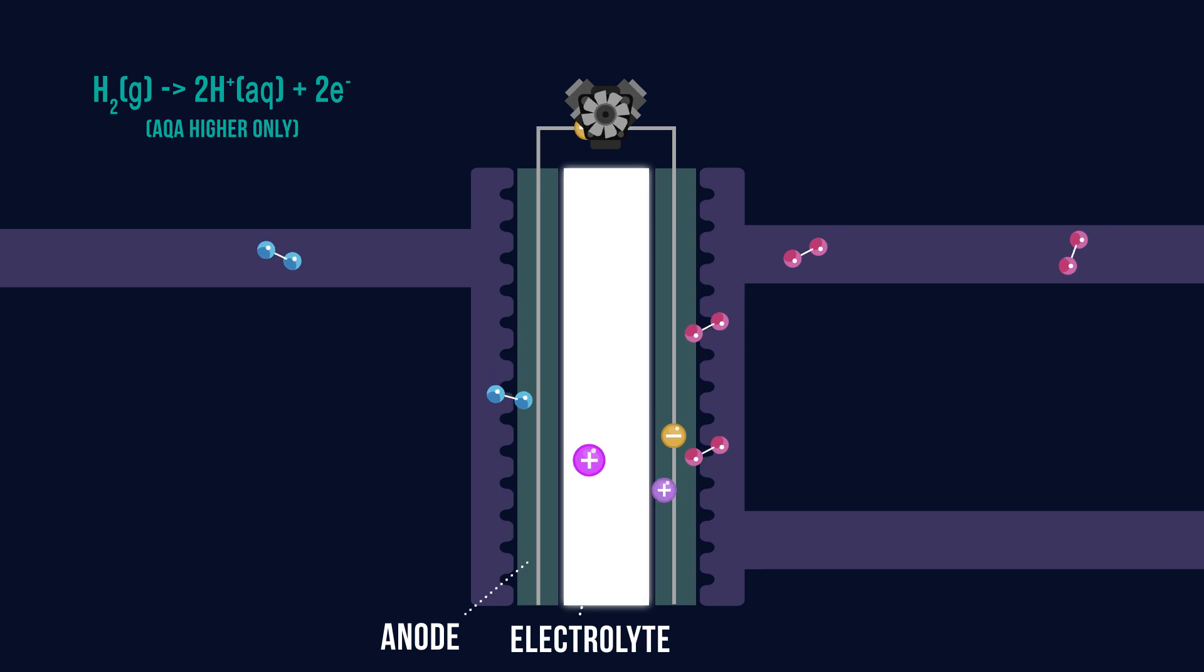The protons pass through the membrane to the oxygen side where they are able to react with the oxygen molecules and the electrons to produce water in a safe and controlled manner, again with the help of another platinum catalyst. This is at the cathode electrode.